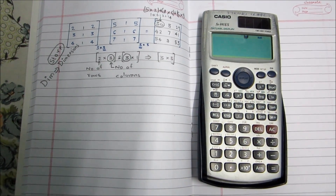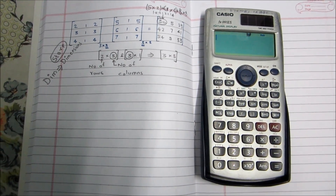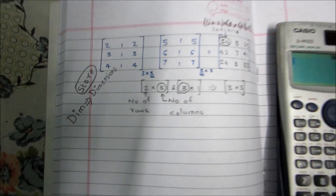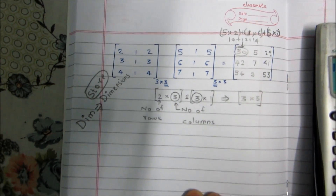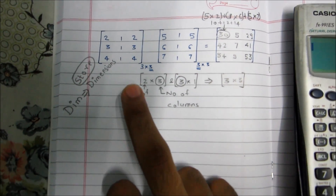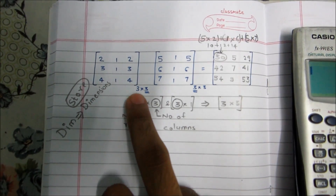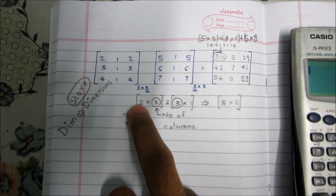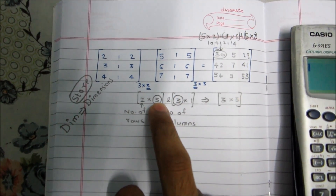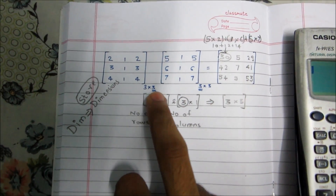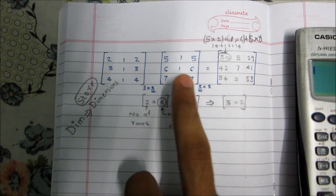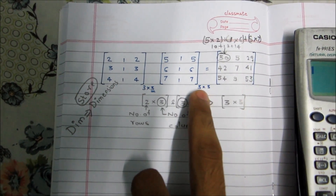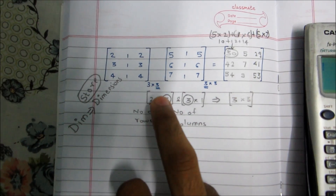Hello guys, today I'm going to show you a trick on how to multiply two matrices using a calculator. The basic criteria for matrix multiplication is that the number of columns of the first matrix and the number of rows of the second matrix should be the same.